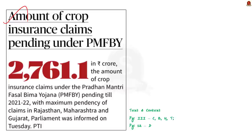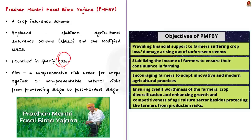Take a look at this next article. According to the article, crop insurance claims under Pradhan Mantri Fasal Bima Yojana (PMFBY) are pending in many states; the maximum pendency of claims is in Rajasthan, Maharashtra, and Gujarat. Let us learn a few points about PMFBY. Note that 'fasal' in Hindi means crop or harvest, and 'bima' means insurance. This is therefore a crop insurance scheme launched in 2016, which replaced the then-existing National Agricultural Insurance Scheme (NAIS) and Modified NAIS. The scheme's first objective is to provide financial support to farmers suffering crop loss or damage arising out of unforeseen events.